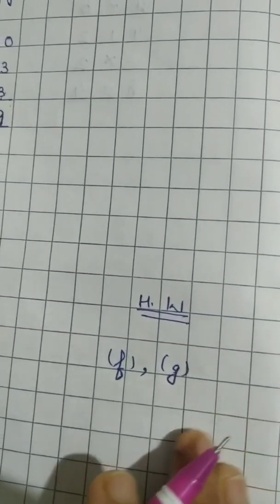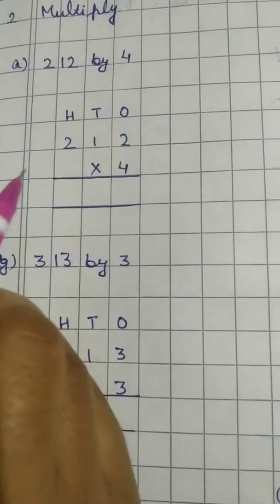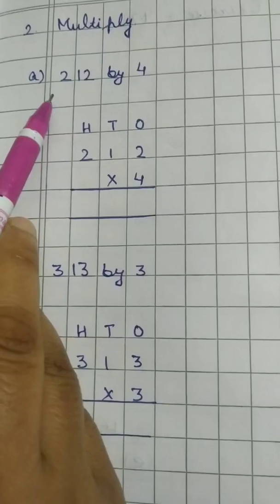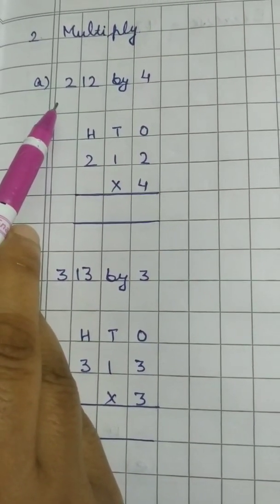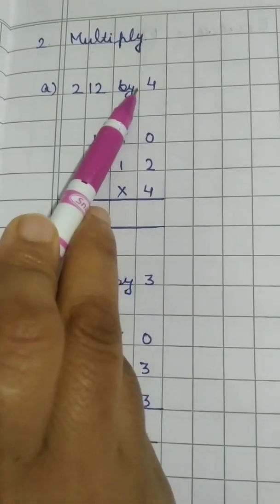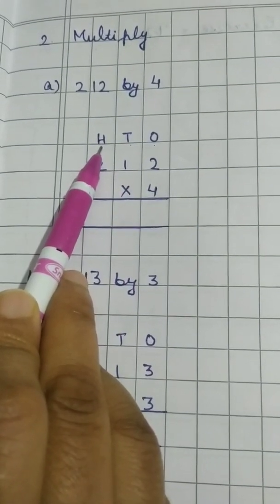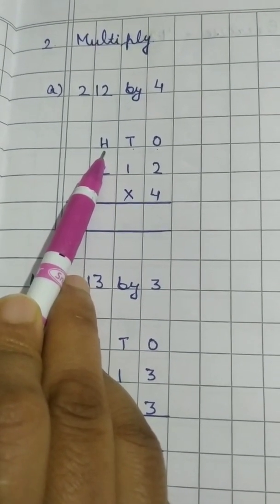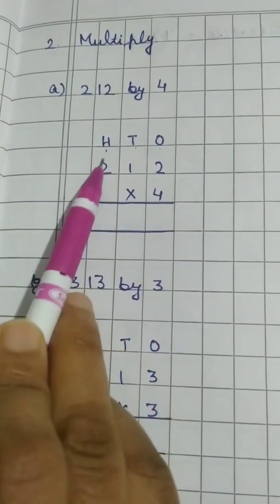Now the two parts which you have to do yourself are F and G part of the same question. Now question number 2 of this. Here we have to multiply the numbers but they are not arranged. First of all we have to arrange them. Here the question is 212 by 4. Write 1's, 10's, 100 in each column. Then write the number which is given.